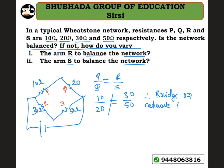Therefore, to balance the network, we need to connect a resistor in parallel.